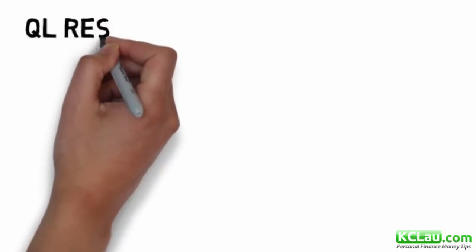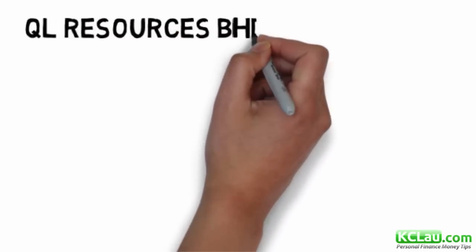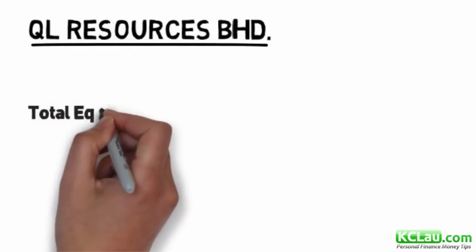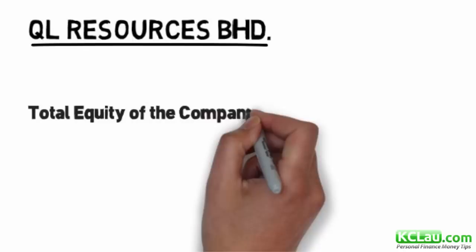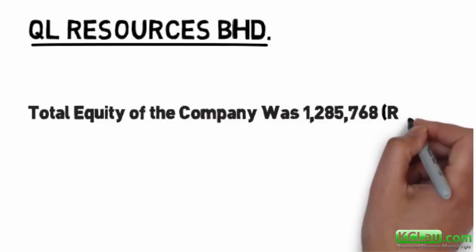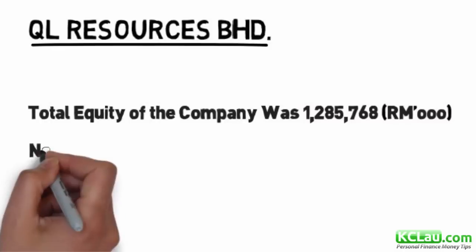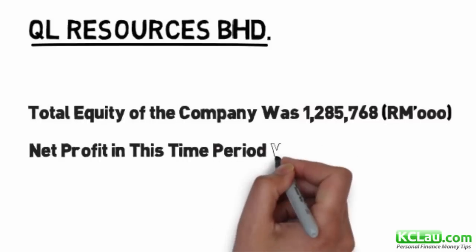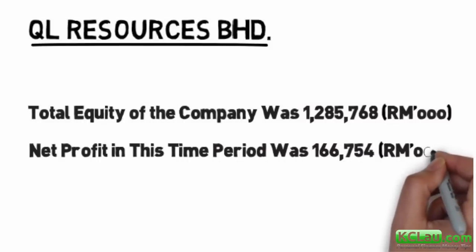First example is QL Resources Berhad. According to the QL Resources Berhad annual report of 2014, the total equity attributable to the owners of the company was RM1.3 billion. The net profit of the company in this period was 166 million.